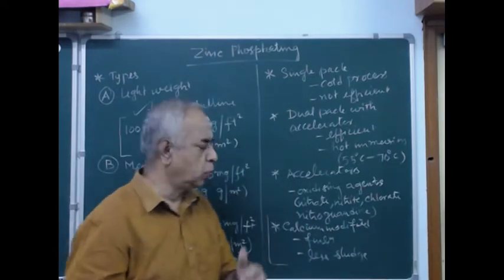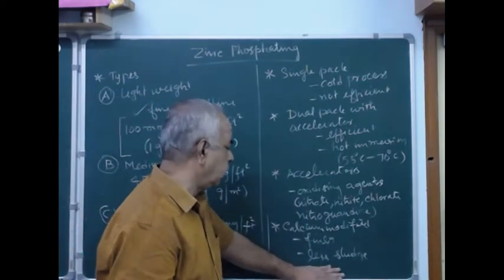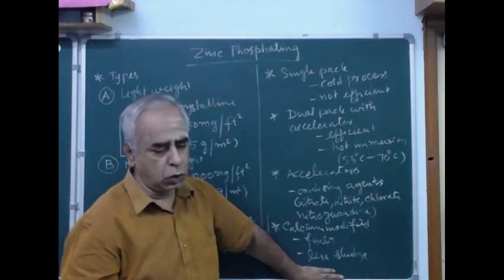It has less sludge also. The major problem with phosphating is the sludge.